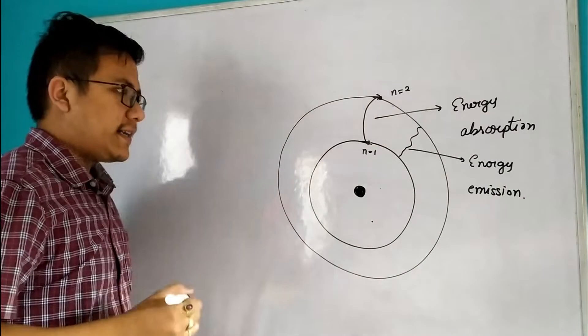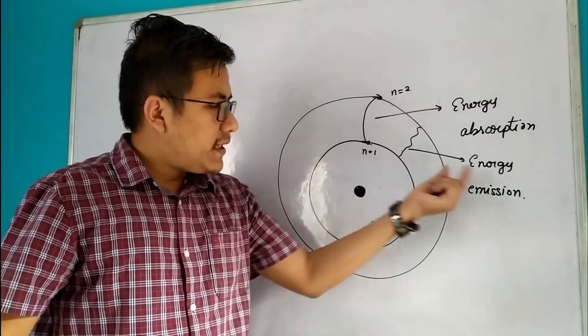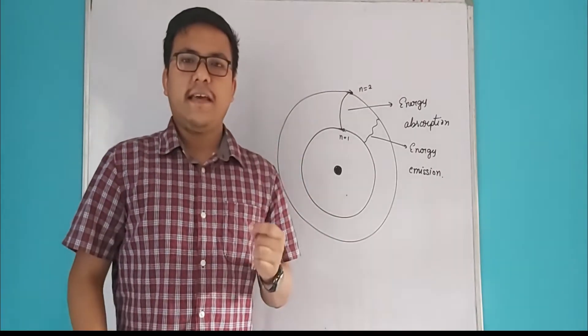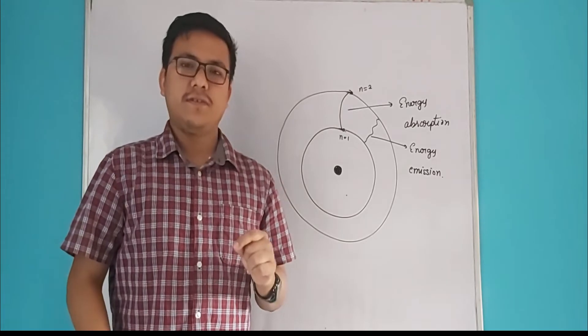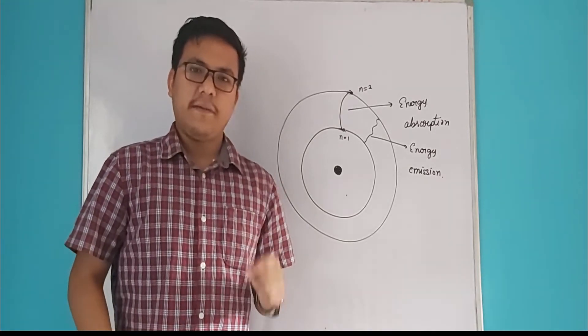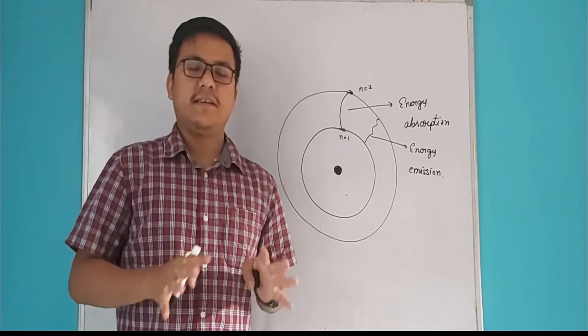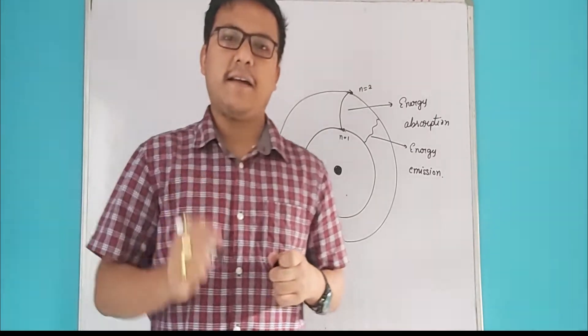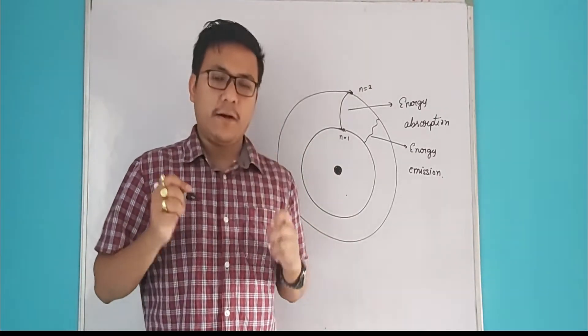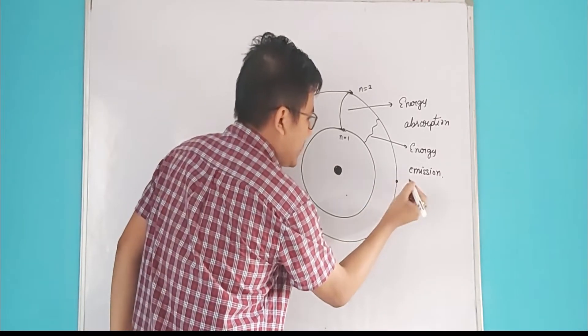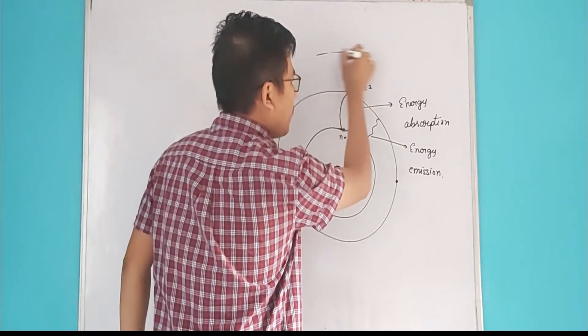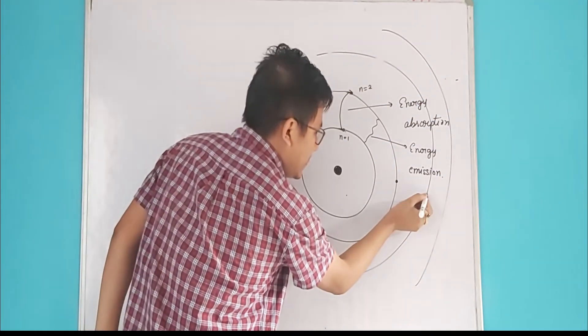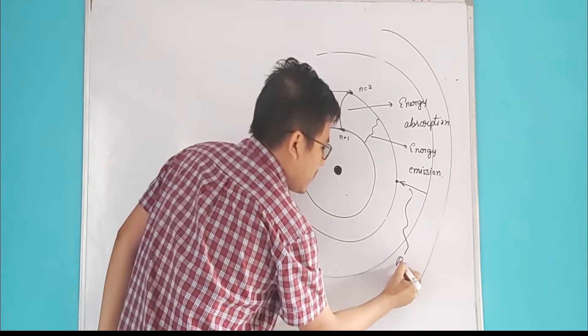The question is about energy emission. So students should know the Balmer series, Lyman series, Bracket series, and so on. For Balmer series, n is equal to 2. So the emission of Balmer series is when electrons fall to the atomic orbit n equals 2 from n equals 3, 4, and so on.